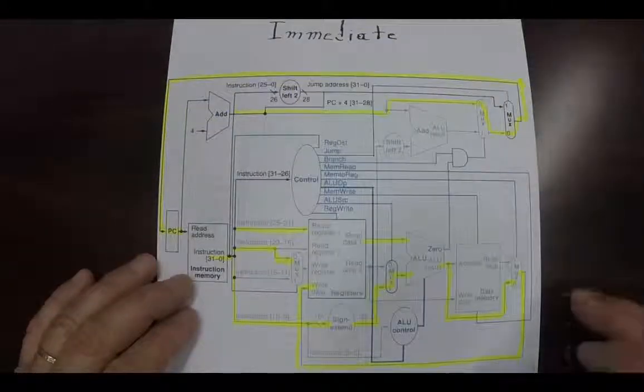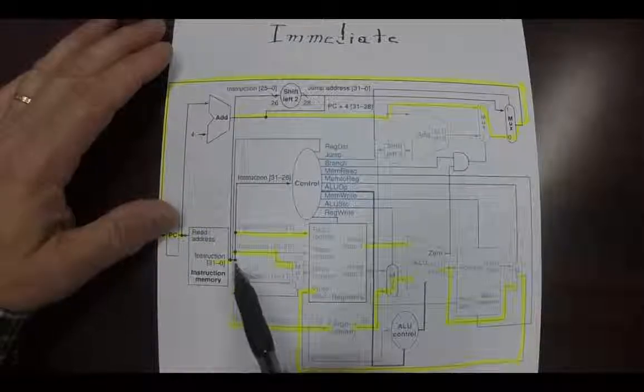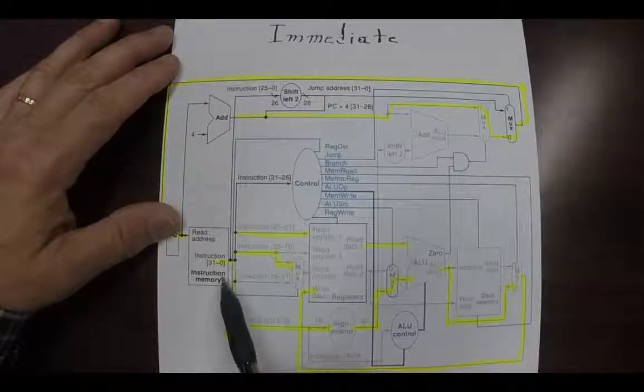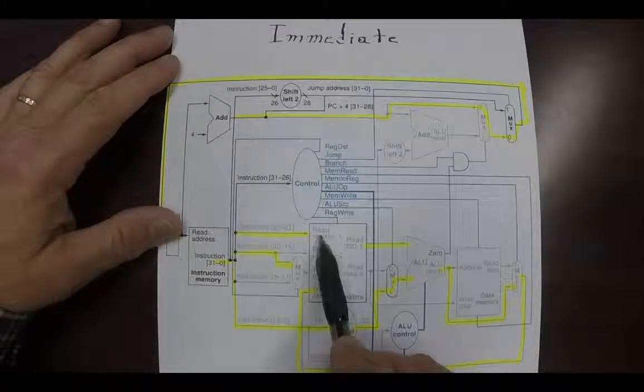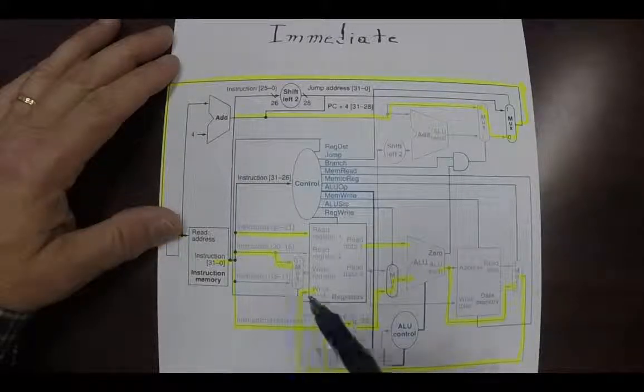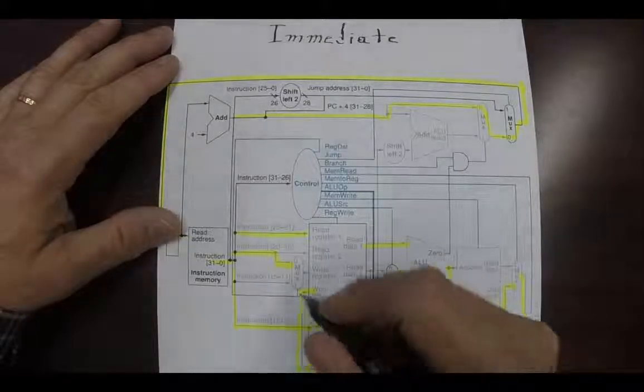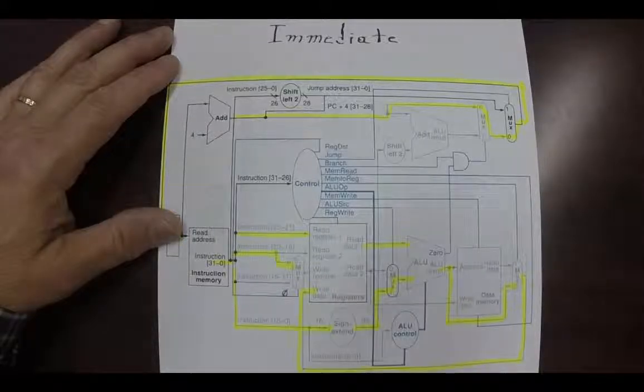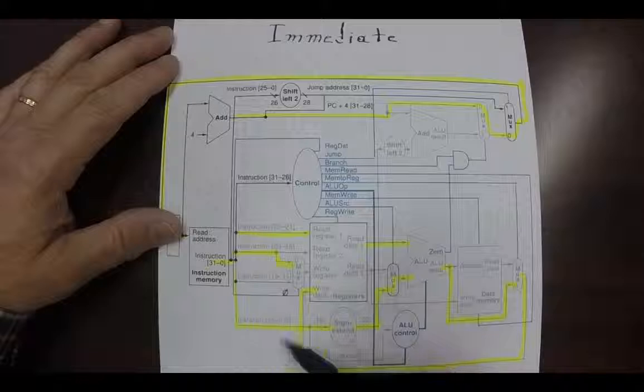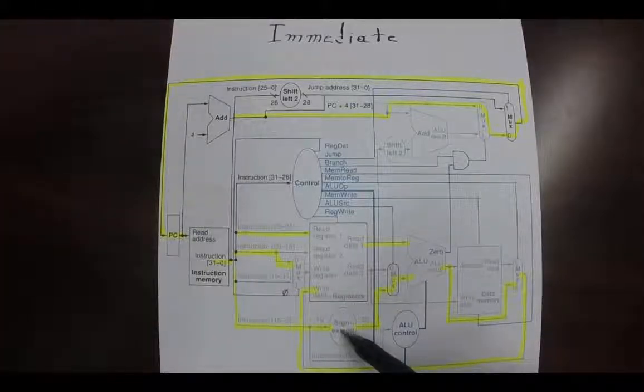Now the immediate instructions are a little bit different. For the immediate instruction we get two registers. We have a register here as the read register, but the second register is not one of the operand registers. It's used as the destination register, and that MUX right here is turned to 0 telling us that this is the write register. The second operand actually comes from the immediate field which is sent down here and the 16 bits is extended to 32.